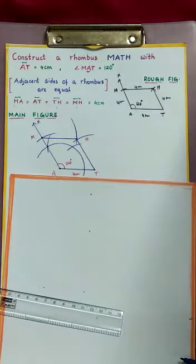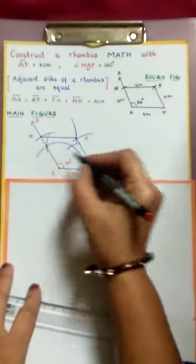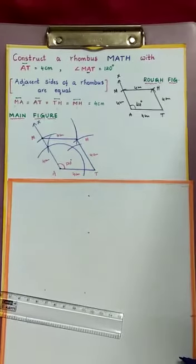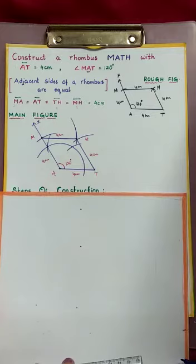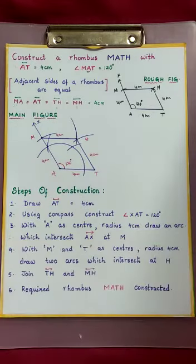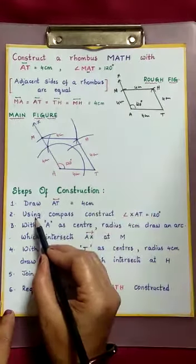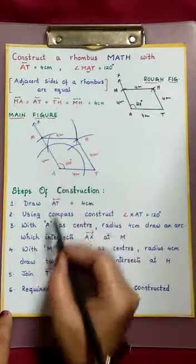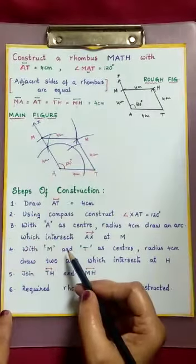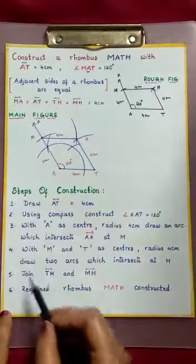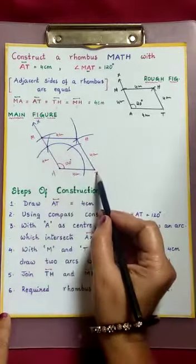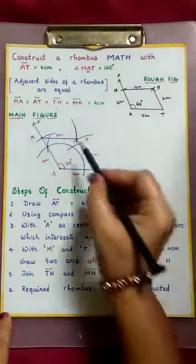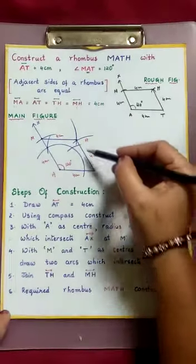See how easy, children. With one radius we can complete this rhombus: 4 cm, 4 cm, and here also 4 cm. Now see the steps of construction. First, draw AT 4 cm. Using compass, construct angle XAT is 120 degrees. With A as center, taking 4 cm radius, draw an arc which intersects AX ray at M. Next, with M and T as centers, taking 4 cm radius, draw 2 arcs which intersect at H. Next, join TH and MH.